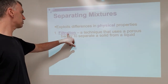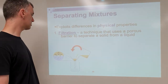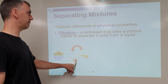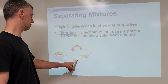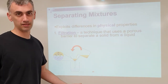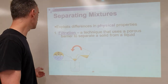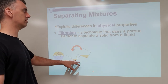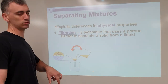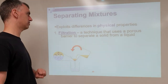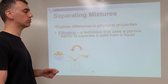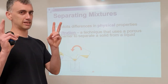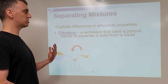Filtration is the quickest, easiest method — using a porous barrier to separate a solid from a liquid. Porous means able to pass through, so this basically means a filter, maybe a cloth filter. Think of a coffee maker: the paper coffee filter catches the coffee grounds. It's the idea of using a barrier that lets some things pass through but not others — letting the liquid through but not the solid. That's filtration.